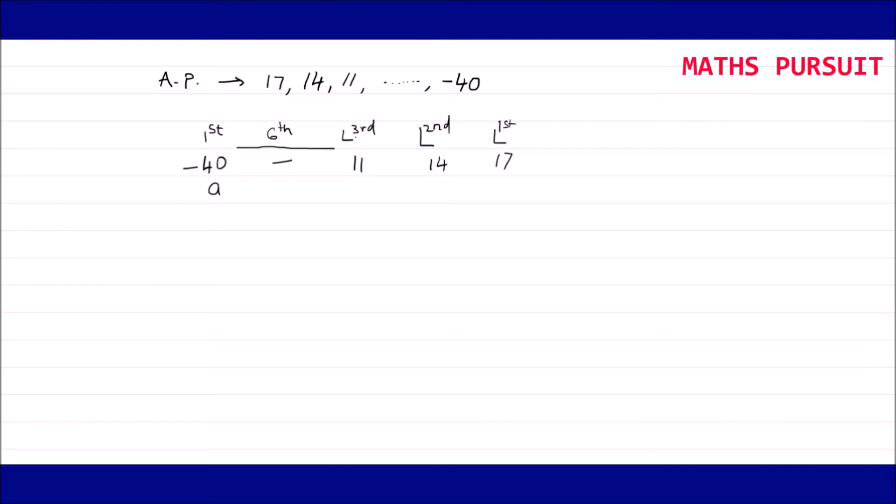I will write this one as the sixth term because our sixth term lies somewhere here and we are going to find out the value of the sixth term. So let me name this one as A1 and this one is A6 because this is the sixth term, and similarly this one is AL3, AL2, and AL1. I just took out the calculation from the end, considering the last term -40 as our first term and considering 17 as the last term.